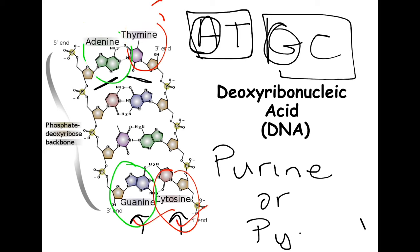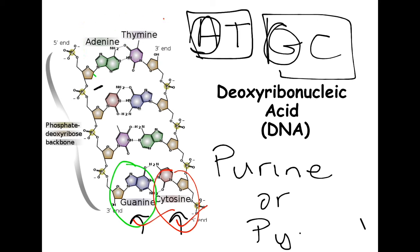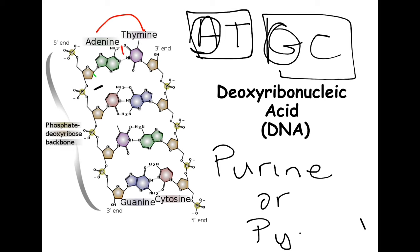Now let's look at the bonds found between the base pairs. Between adenine and thymine, there are two hydrogen bonds. When we look at guanine and cytosine, there are three bonds. So G and C have three bonds between them, and A and T have two bonds.